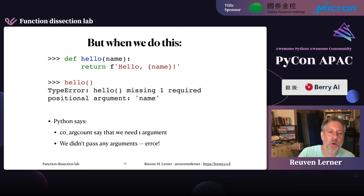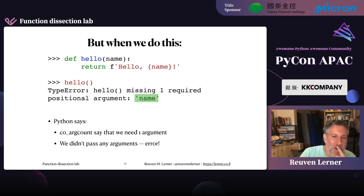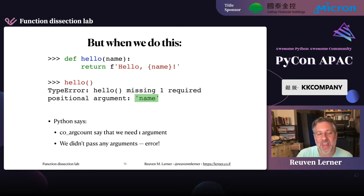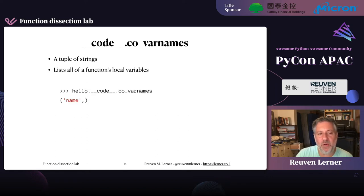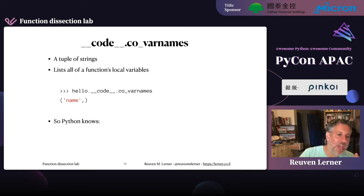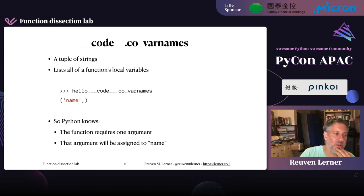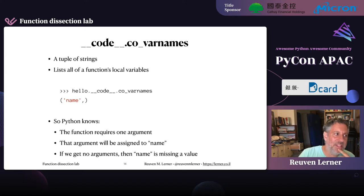But how did Python know that the argument would be assigned to the parameter 'name'? There's another attribute called co_varnames. This is a tuple of strings containing all of a function's local variables, and the first local variables are the parameters. In this version of our function, we only have one parameter and no other local variables. When I ask for hello.__code__.co_varnames, we see a tuple of one element: 'name'. So Python knows the function requires one argument thanks to co_argcount, and knows that argument is assigned to 'name' via co_varnames.